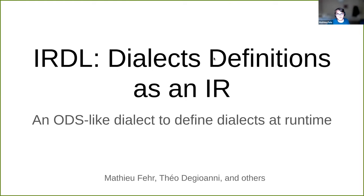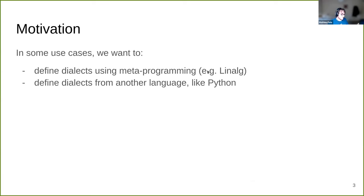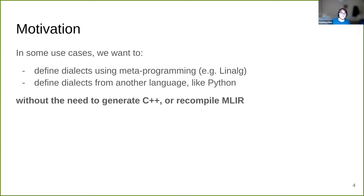Today I'm going to present IRDL, which is an ODS-like dialect to define dialects at runtime in MLIR. Most of the time when you want to create your dialects in MLIR today, you use TableGen with ODS or you can define it in C++. But there are some cases where you'd like to define dialects using metaprogramming, or from another language like Python, without having to generate C++ or recompile every time you make a change.